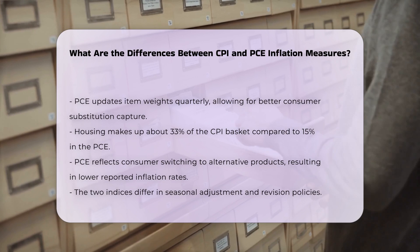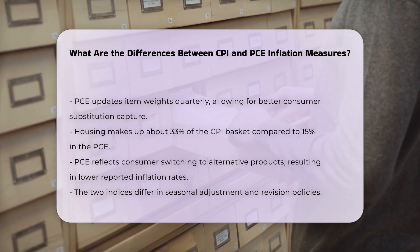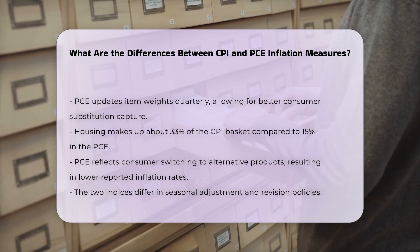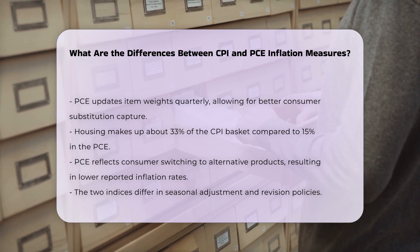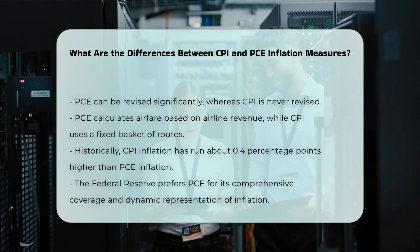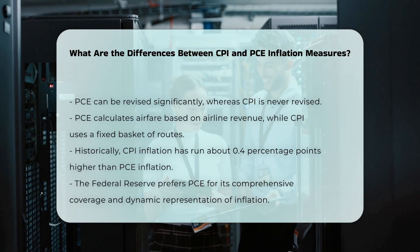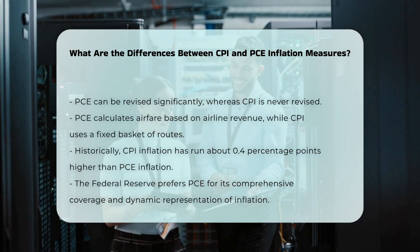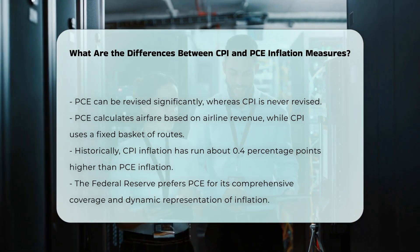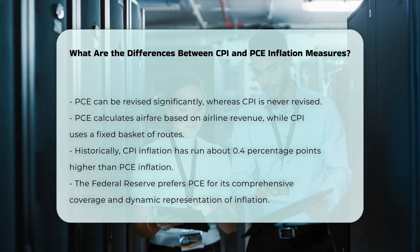Inclusion of specific items. The PCE and CPI measure some items differently. For instance, the PCE calculates airfare prices using data on airline passenger revenues and passenger miles traveled, while the CPI uses a fixed basket of air routes. This difference in measurement can contribute to the variation in inflation rates between the two indices.